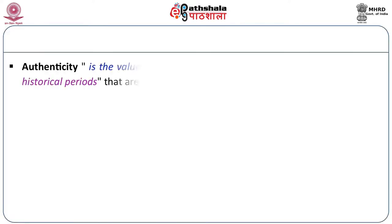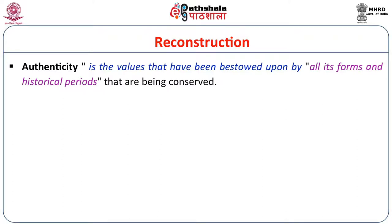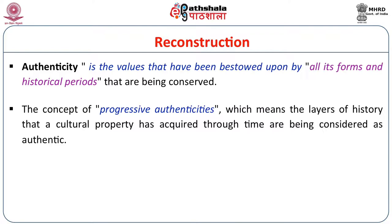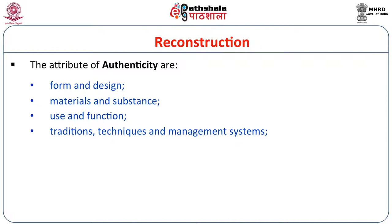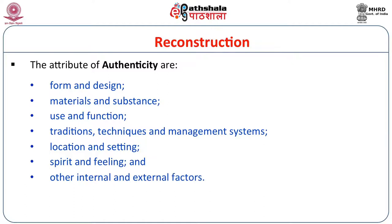Authenticity is very important; any conservation work has to be carried out with authenticity kept in mind. Authenticity means the value that has been bestowed upon in all its forms and historical periods that have been conserved. The concept of progressive authenticities means the layers of history and identity that the cultural property has acquired through time are considered authenticity. Periodically there may be additions and alterations; those are also part of authenticity and must be maintained and preserved along with the original monument. The parameters of authenticity include: forms and design, material and substance, use and function, tradition, techniques and management system, location and setting, spirit and feeling, and other national and international factors.